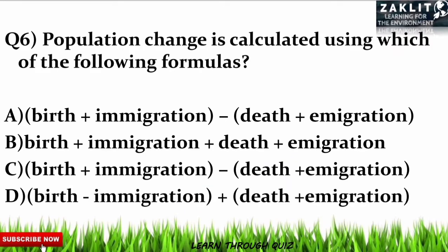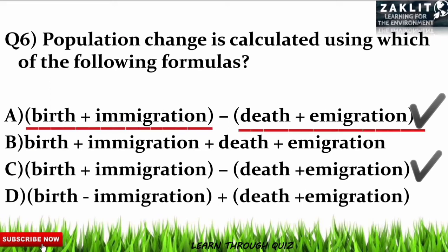The sixth question was: population change is calculated using which formula? Both options A and C are correct, as they are repeated. Births plus immigration, subtracted from deaths and emigration, gives the population change of any area.